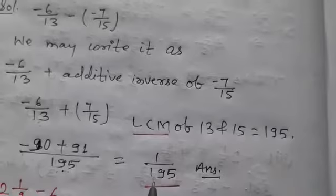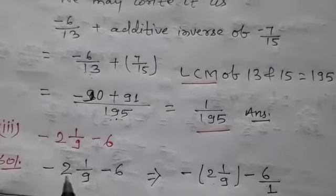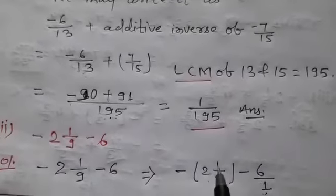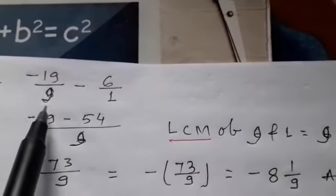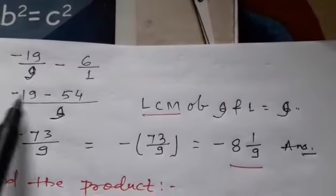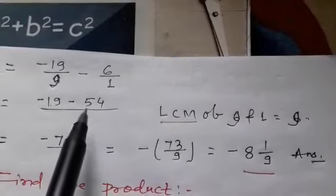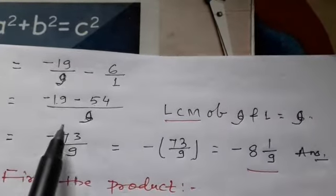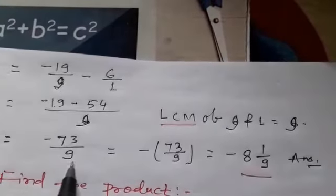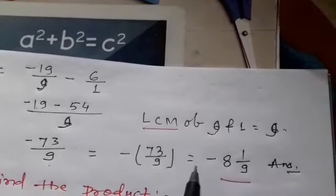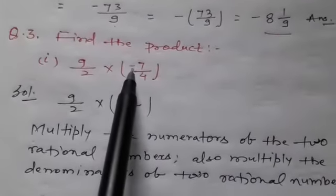Next is: −2⅑ minus 6. At first we convert the mixed fraction into an improper fraction: it becomes −19/9 minus 6/1. We find the LCM of 9 and 1, which is 9. So −19 − 54 = −73. Both are negative so we add them: −73/9. Converting to a mixed fraction gives −8 and 1/9.